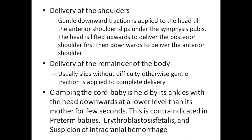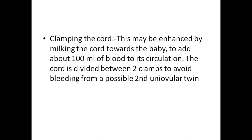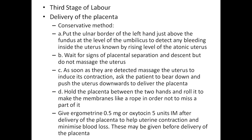Clamping the cord: the baby is held by its ankles with the head downwards at a lower level than its mother for a few seconds. This is contraindicated in preterm babies, erythroblastosis fetalis, and suspicion of intracranial hemorrhage. Clamping may be enhanced by milking the cord towards the baby to add about 100 ml of blood to the circulation. The cord is then divided between two clamps to avoid bleeding from a possible second univovular twin.